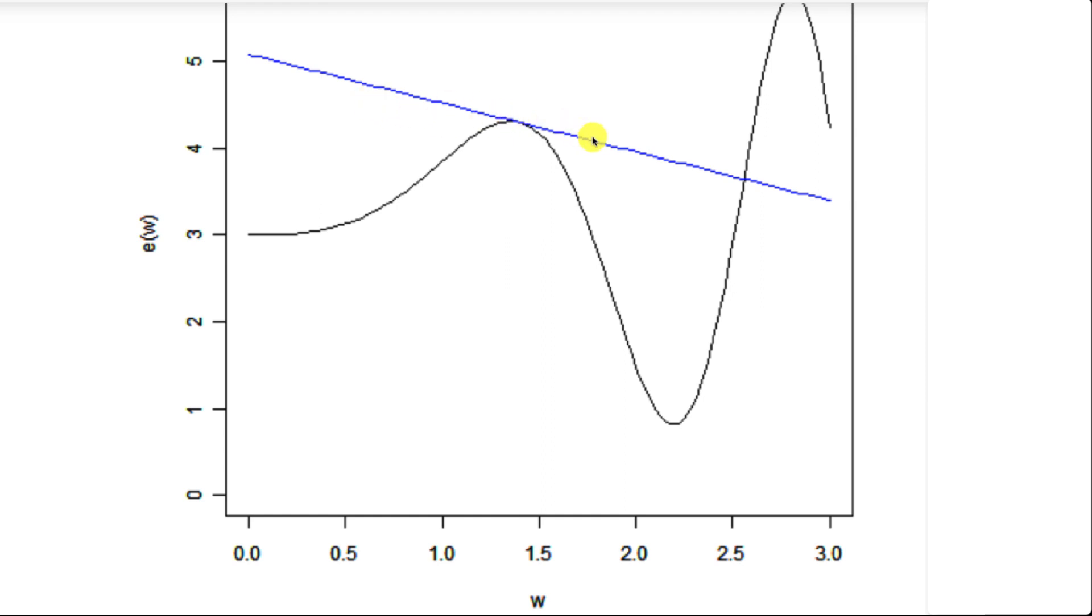You can tell by the slope of this value, this has a negative slope, so that means we need to increase the weight to move towards the minimum. You're always changing the weight by the inverse of the sign of the slope or the gradient. This is typically called gradient in machine learning.